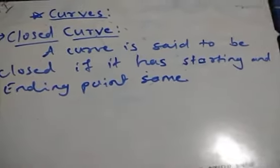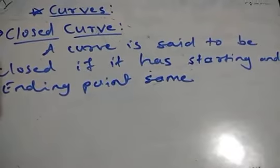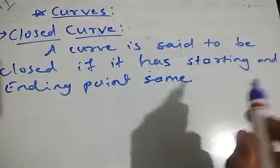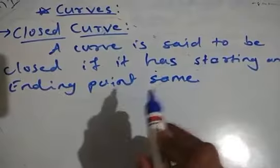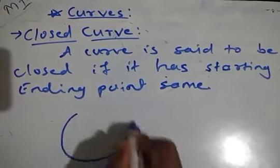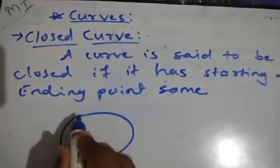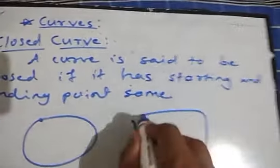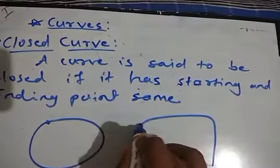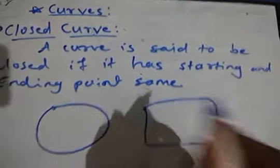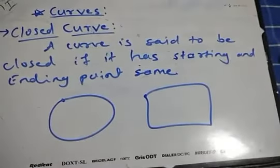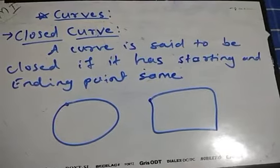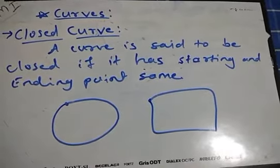Now let's discuss the next type, that is closed curve. A curve is said to be closed if it has the same starting and ending point. For example, if I draw this figure, the starting point and ending point is the same. The starting point and ending point is the same, and that is why these are closed curves.